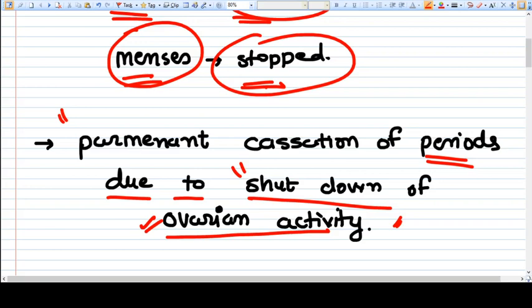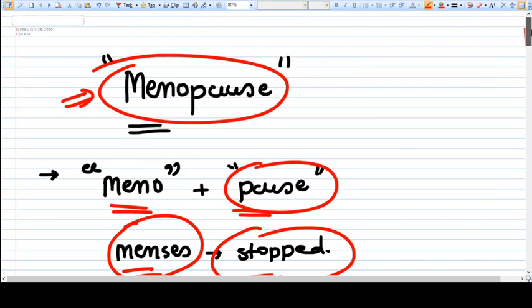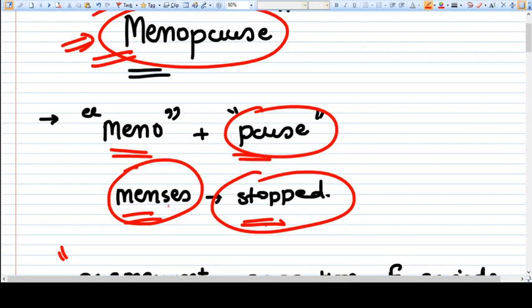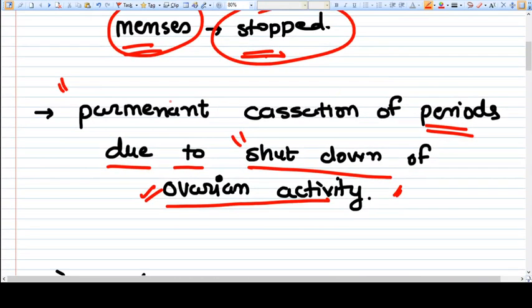Hello everyone, so we are starting our series on menopause. Menopause literally means menses stopped. If we see the definition, it is a permanent cessation of periods due to shutdown of ovarian activity.